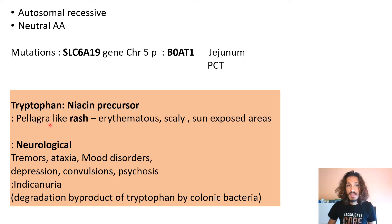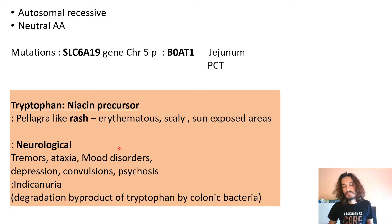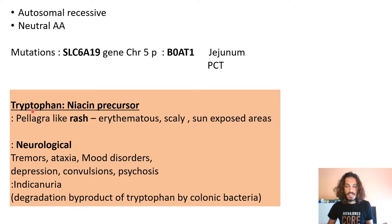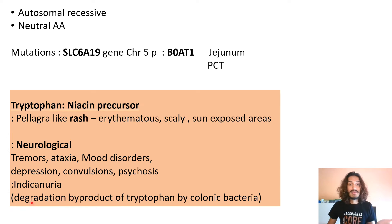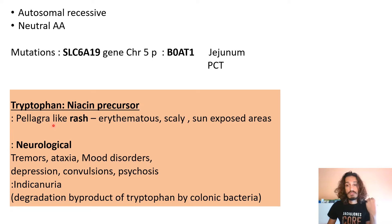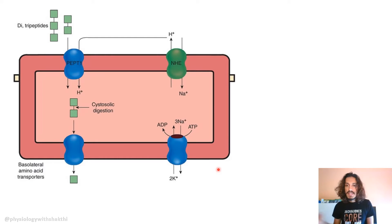Skin issues include erythematous scaly lesions in sun-exposed areas. Neurological features can include tremors, ataxia, mood disorder, depression, convulsion, and psychosis. Additionally, because tryptophan is not absorbed it passes into the colon, where colonic bacteria convert it to indican, which is then absorbed and excreted in urine as indicanuria. This covers pathology, biochemistry, and medicine.